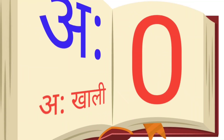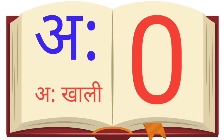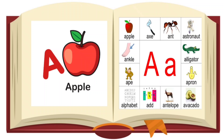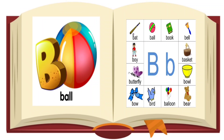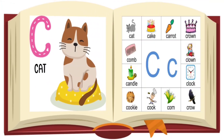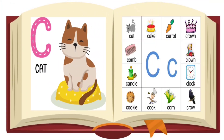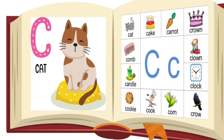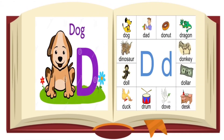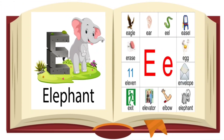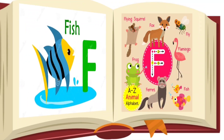A for apple, A for ant. B for ball, B for book, B for bear. C for cat, C for cock. D for dog, D for duck. E for elephant, E for eagle.